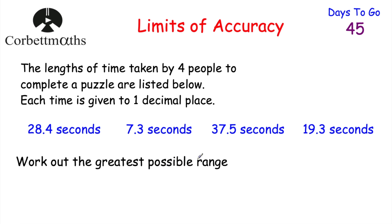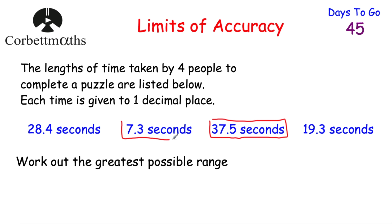So we're asked to find the greatest possible range. Remember the range is the biggest number take away the smallest number — in this case the longest time take away the shortest time. The longest time is 37.5 seconds and the shortest time is 7.3 seconds. Obviously each of these times has been given to one decimal place, so they've been rounded to one decimal place. So for these times, let's write down the upper bounds and the lower bounds.